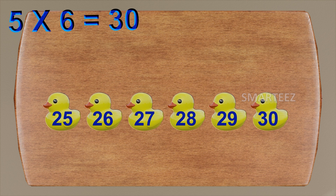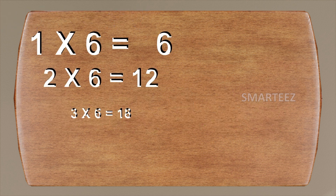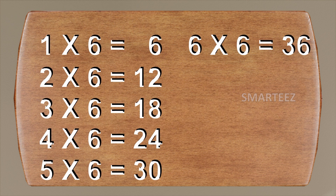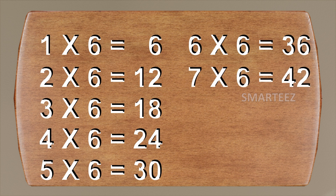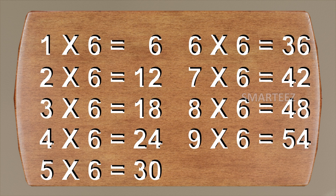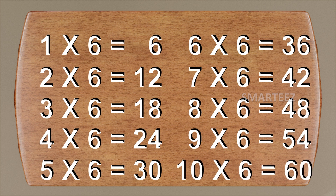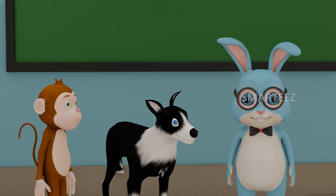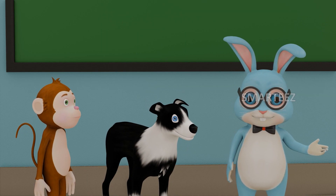This table of six will keep going: six times six is thirty-six; seven times six is forty-two; eight times six is forty-eight; nine times six is fifty-four; and ten times six is sixty. We call this the multiplication table for six.